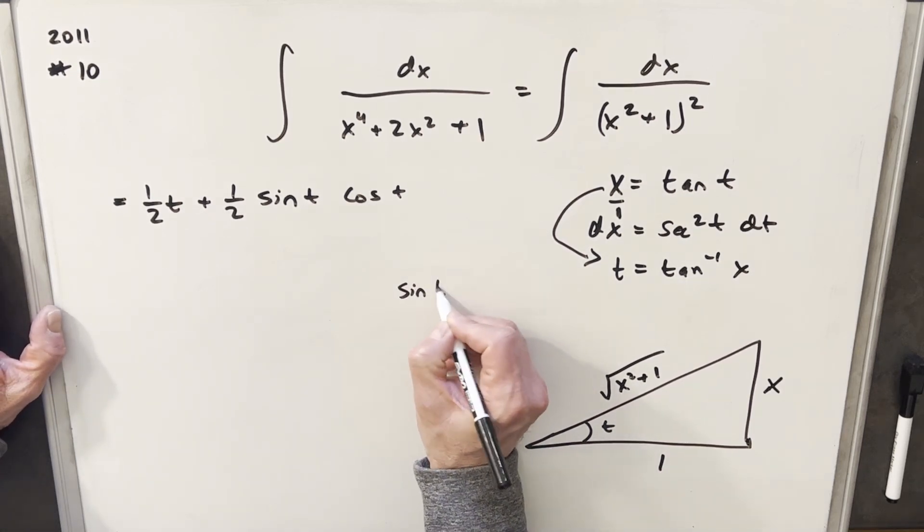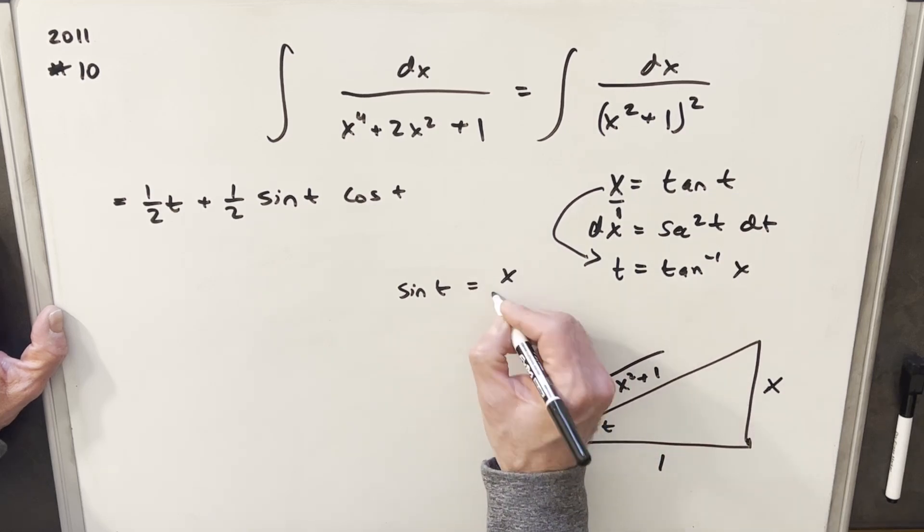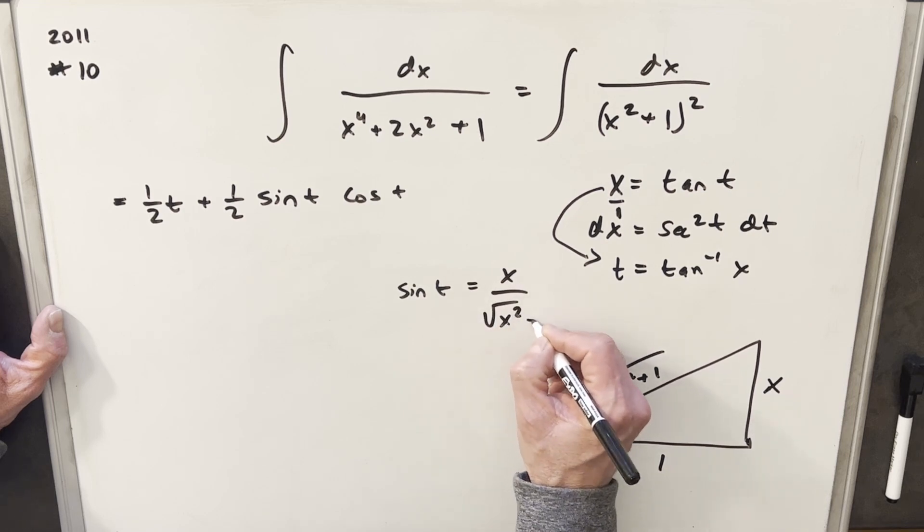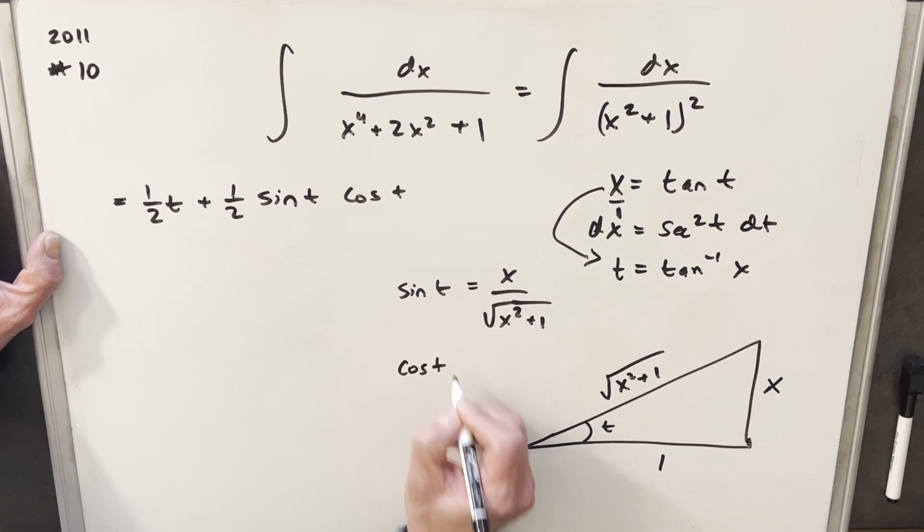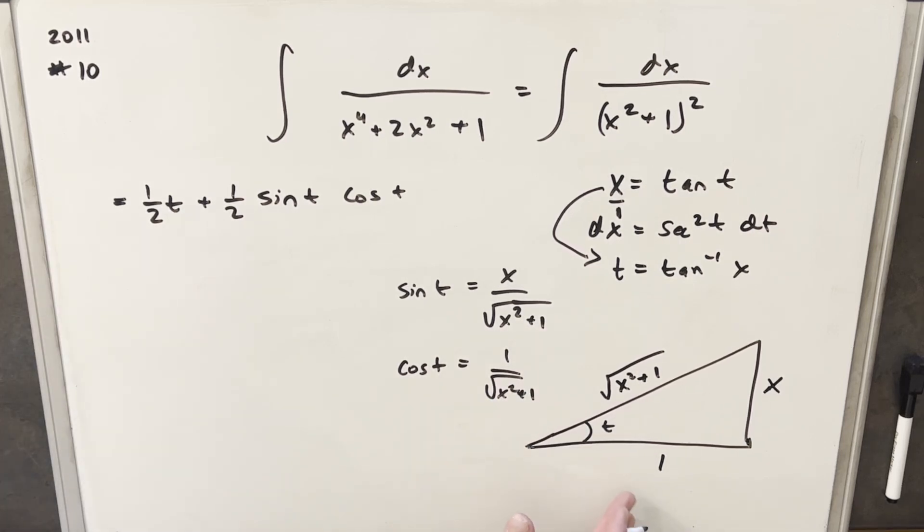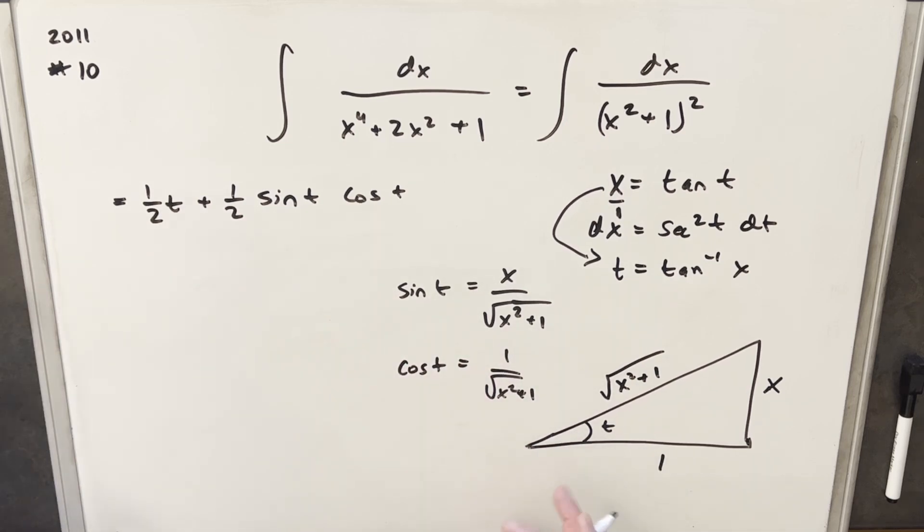So for sine of t, we're going to be looking for opposite over hypotenuse. Okay, so that's just going to be x over square root of x squared plus 1. Then for cos t, we're looking at adjacent over hypotenuse, so 1 over square root of x squared plus 1. Now at this point, we have everything we need, right? We found our t value. We found our sine t. We found our cos t. We just need to plug everything back in.